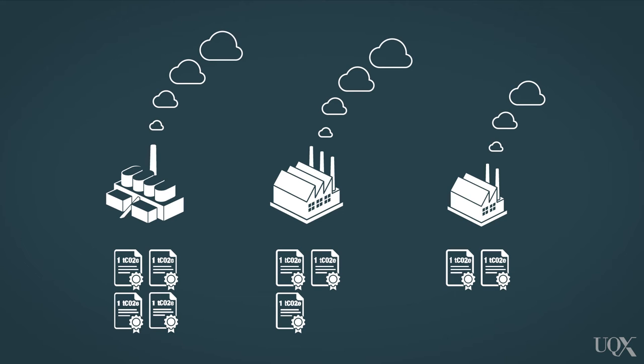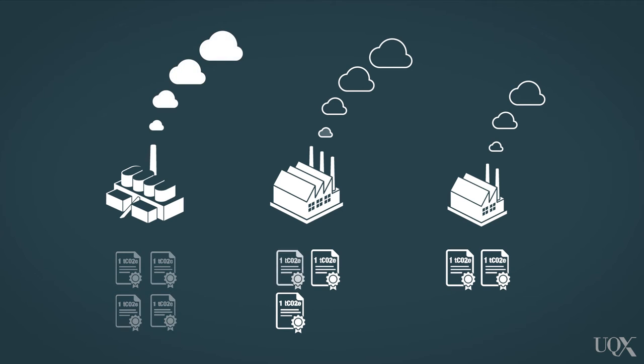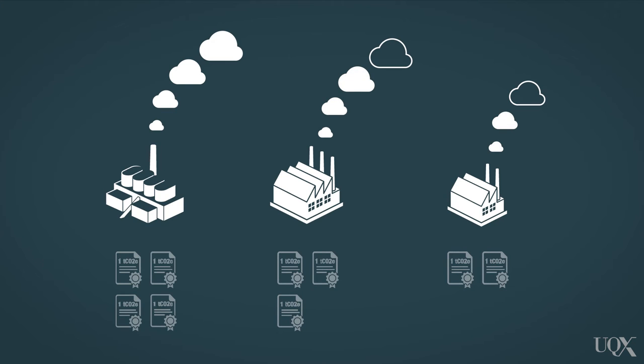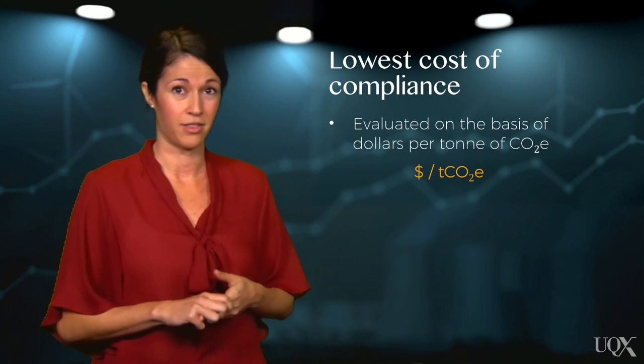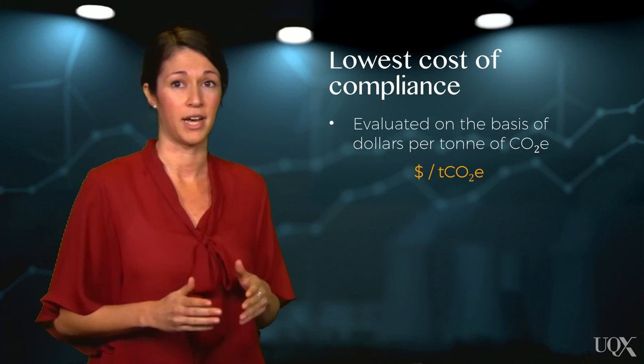Critically, these liable companies must obtain one allowance certificate for each tonne of CO2e that they emit. If they don't, they face hefty fines for every tonne that they do not have an allowance for. Under an ETS, some companies will not have enough allowances to cover their entire carbon footprint — we refer to this as being short in allowances. These companies have the option of reducing their emissions to avoid the fine, or purchasing allowances from a company that has too many. Logically, a company will pursue the lowest cost option, which is evaluated on the basis of dollars per tonne of CO2e.